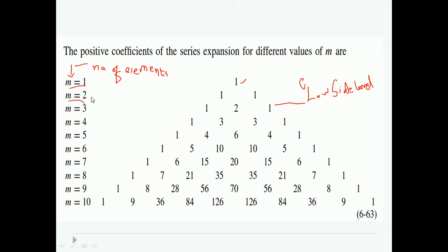When there are, for example, two number of elements, I feed both the elements with an amplitude coefficient of 1. That is, both the elements are fed with equal amplitude. Then I can get a low side lobe level. Now when I have the number of elements in an array, m is equal to 3, then I need to feed the 3 elements with the ratio 1 is to 2 is to